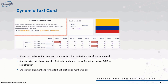We can now enhance our cards by using dynamic narrative and rich text styles. This allows you to change values on your page based on context selectors from your model, add styles to text, choose font size, font color, apply and remove formatting such as bold or strikethrough, choose text alignment, and format text such as bullet list or number list.